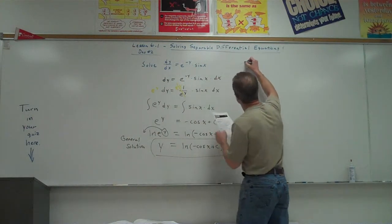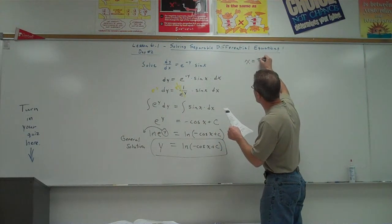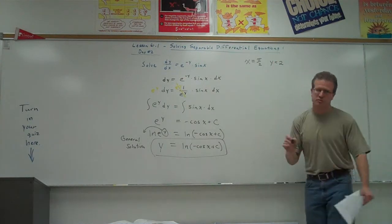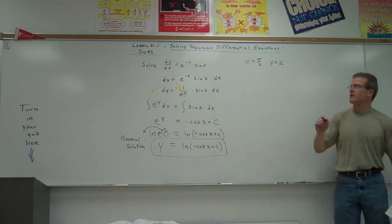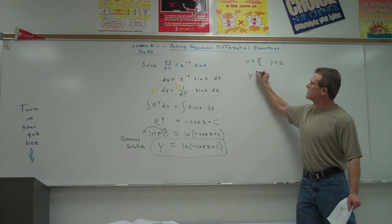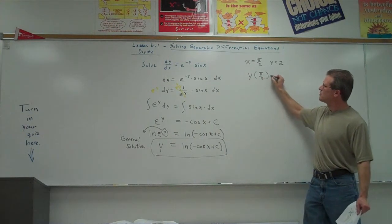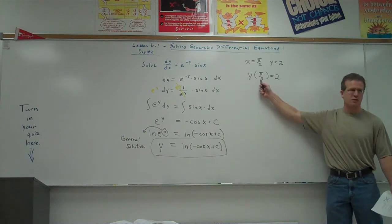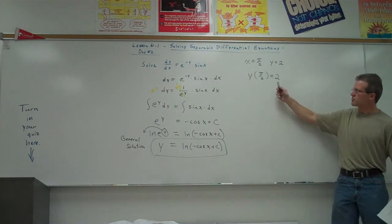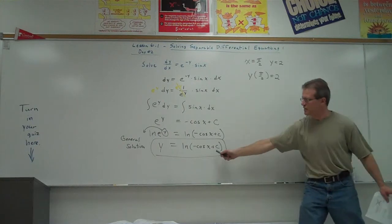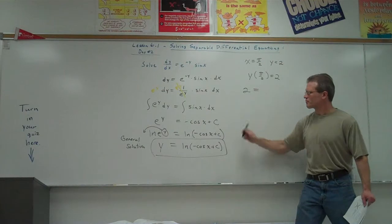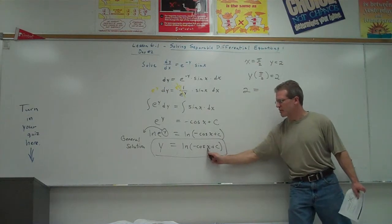Now if they give you a specific value that the curve has to go through, which they do in this case, is they say when x equals pi halves, y equals 2. Now our textbook's probably not going to show it that way. They're probably going to write it this way: y of pi halves equals 2. In other words, y equals 2 when x is pi halves. So all we're going to do now is plug 2 in for y and pi halves in for x down here. So 2 in for y, so you're going to have 2 equals natural log of the negative cosine of pi halves plus c.